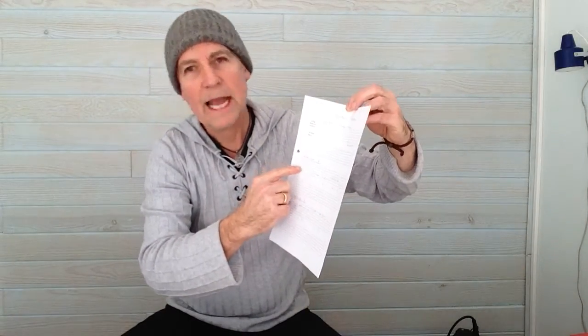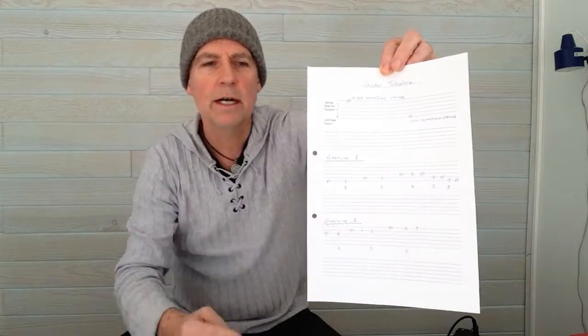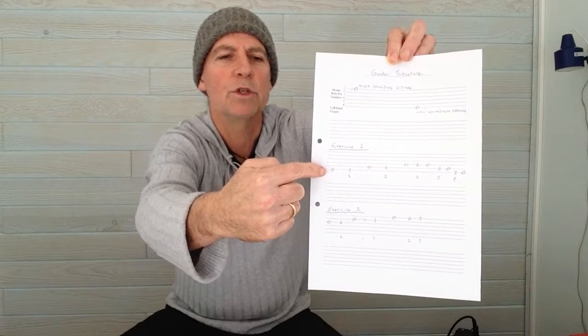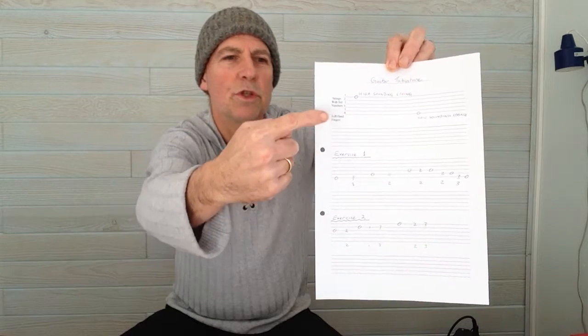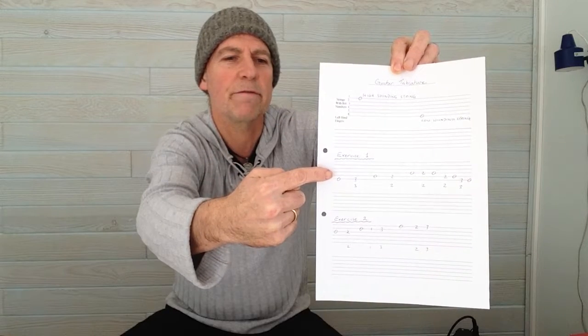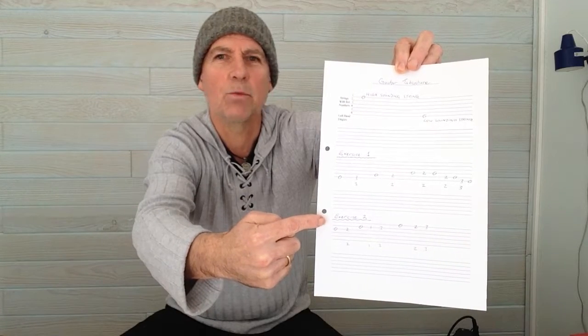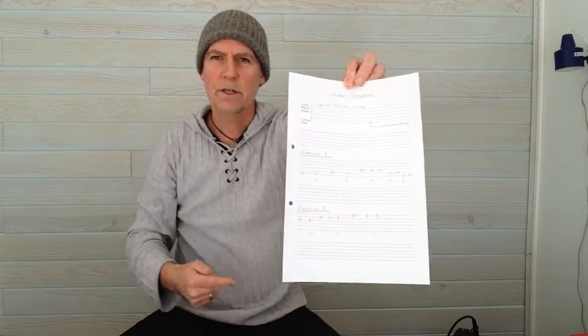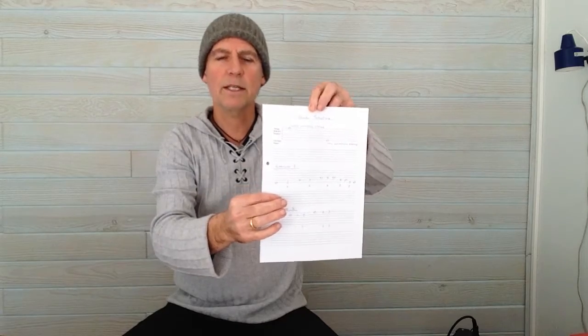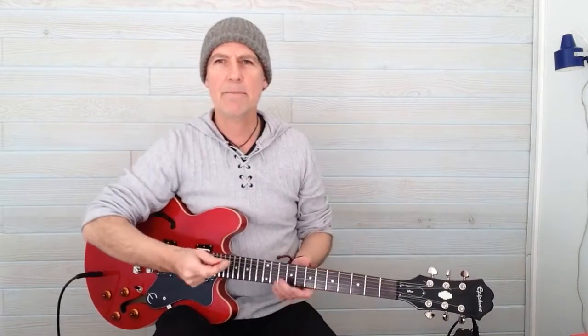Exercise one, halfway down the page, has a dozen or so notes which are on the lowest sounding string — string six — and there are also notes on string five and string four. Exercise two has notes on strings three, two, and one. In both exercises I've put the left hand fingers used to press the strings down underneath the set of six lines. You can download this from the website and look at it while watching the lesson.